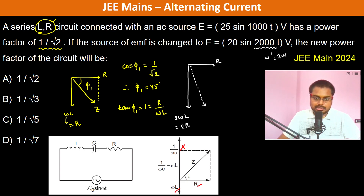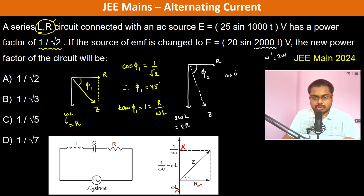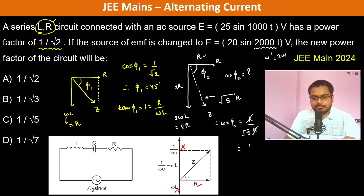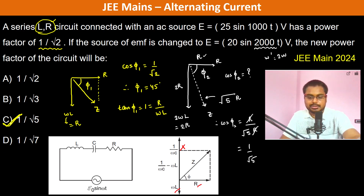The new impedance Z is in this direction, making angle φ₂. We need to find the new power factor cos φ₂. With R on one side and 2R on the other, the impedance magnitude is √(R² + (2R)²) = √5 · R. Therefore cos φ₂ = R / (√5 · R) = 1/√5. So the new power factor is 1/√5.